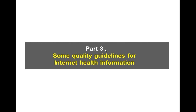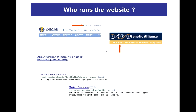Here are some tips to help you evaluate the quality of internet health information. Who runs the site? Who is the editor, the producer? The source of medical information is the first criterion for its credibility and quality and must always be displayed. Generally, search this information in a section named 'About us' or 'Who we are'. Some websites, like Orphanet, go further by displaying a quality charter on their homepage.